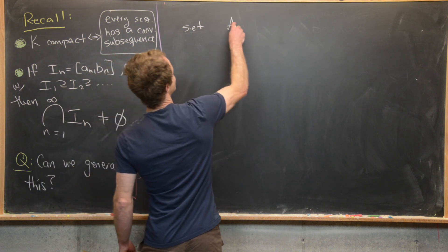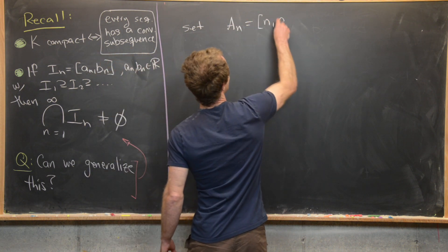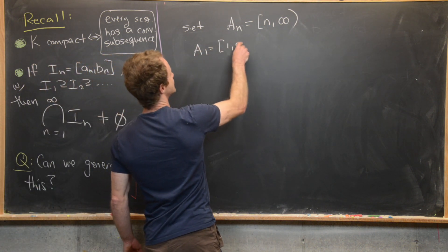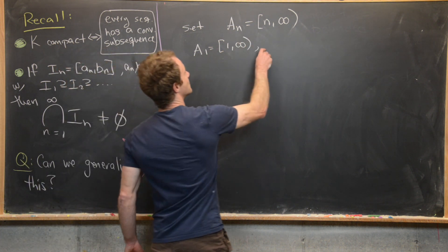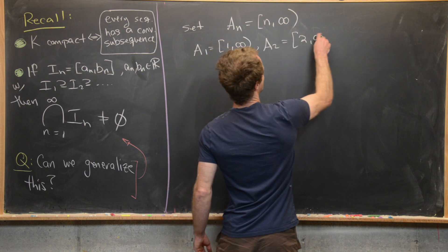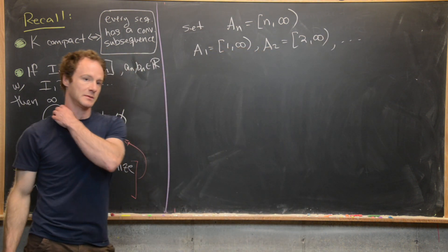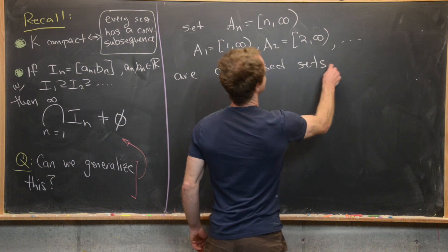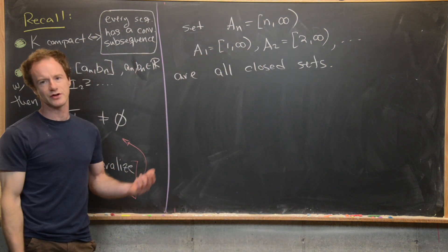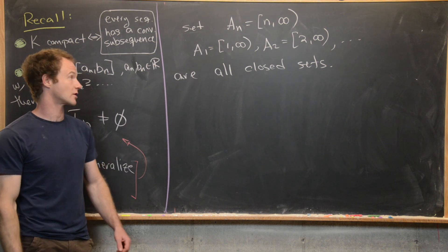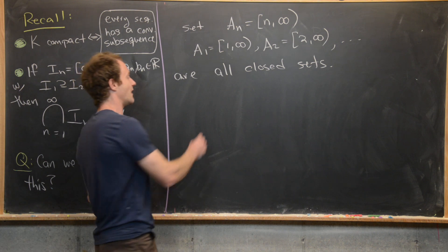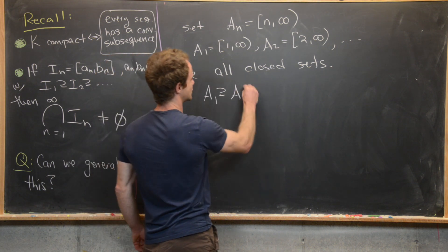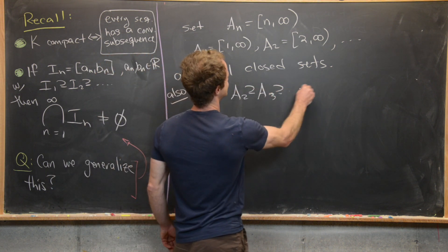Let's set A_n to be the set [n, ∞). So A_1 is [1, ∞), A_2 is [2, ∞), and so on. Notice these are all closed sets — they contain all of their limit points, I'll let you check that. And they also satisfy this nesting condition: A_1 contains A_2, which contains A_3, and so on.